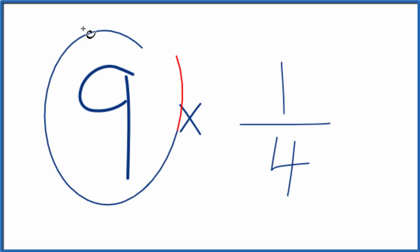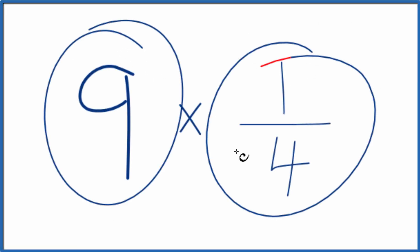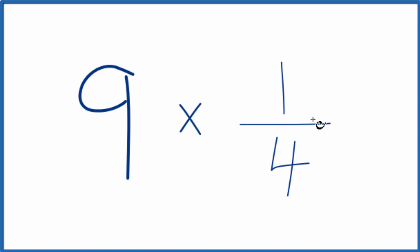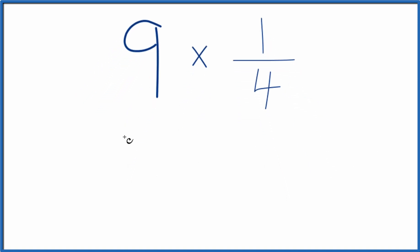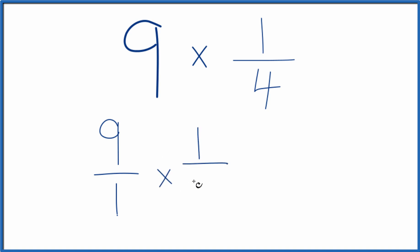If you need to multiply 9 times 1 fourth, here's how you can do that. So first off, you could just add 1 fourth up 9 times, and that would give you the correct answer for 9 times 1 fourth. It might be easier, though, to think of 9 as 9 over 1. 9 divided by 1 is still 9, but now we have a fraction, and we can multiply that fraction times the 1 fourth up here.